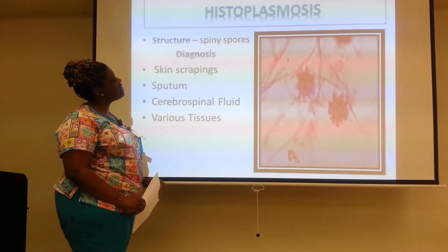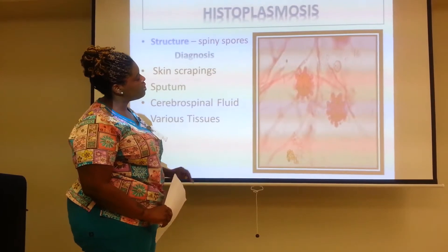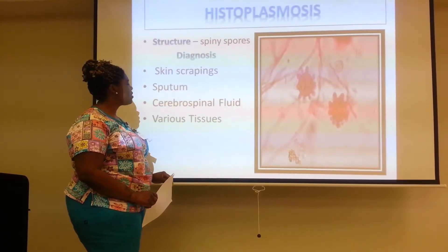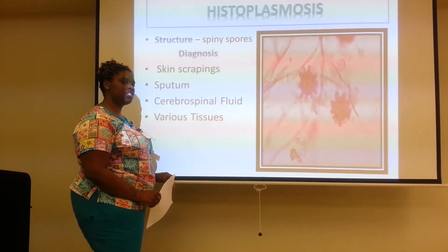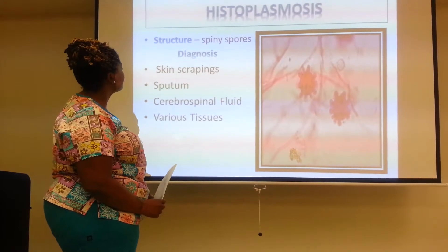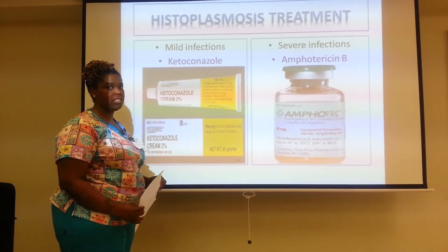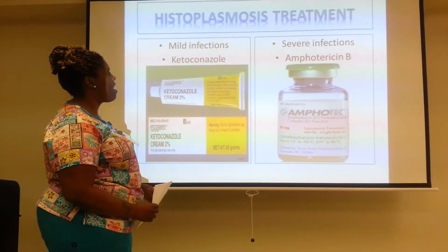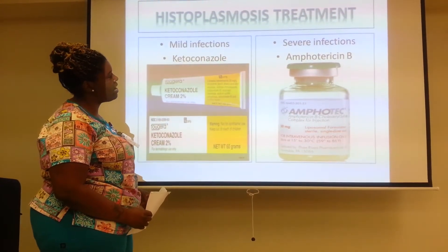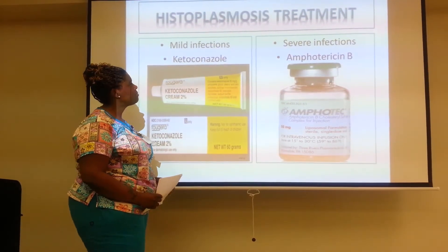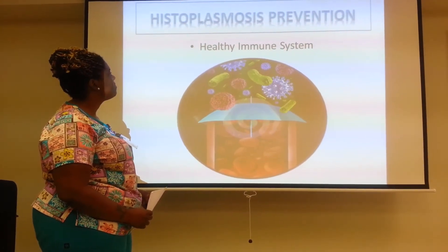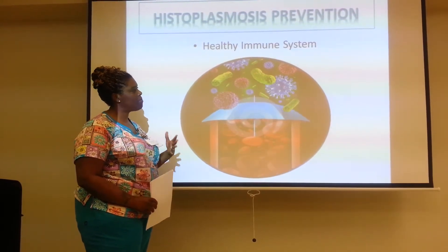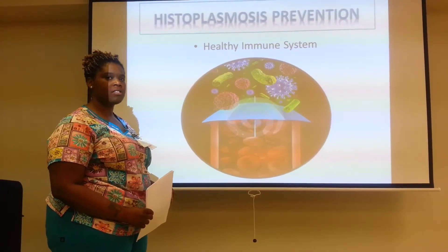The structure of Histoplasma capsulatum is a spiny spore — as seen in the picture, spines come off the spore, making it a small, tiny, spiny spore. It can be diagnosed through skin scraping, sputum, cerebrospinal fluid, and various tissues. Treatment is ketoconazole, which is a cream, and amphotericin B, which can be given by injection or IV. Prevention of histoplasmosis involves maintaining a healthy immune system to keep bacteria and fungi out.